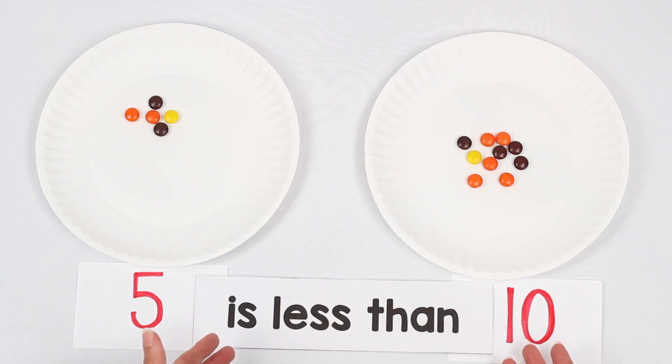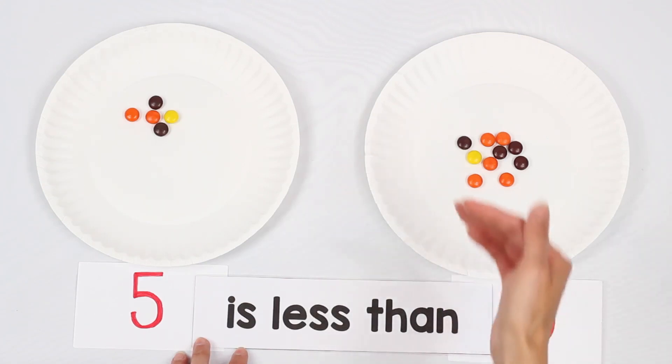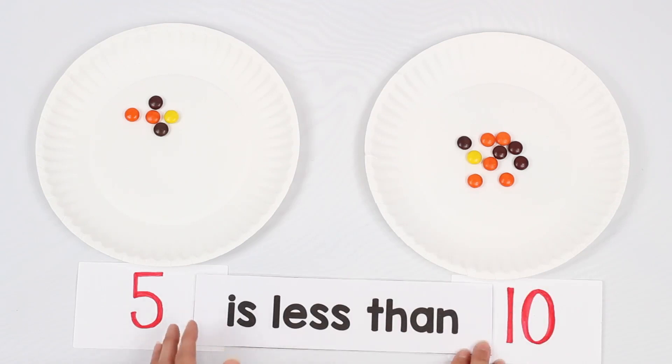Now you might be wondering, well, what about my non-readers? I have kids who are not even going to be able to read this. And that's a really good concern. I would suggest that if you're writing this out on your whiteboard to write these in the same order every time. Maybe always use is greater than, is less than, is equal to. So it's a predictable pattern for the students and it helps them better understand which one to choose.